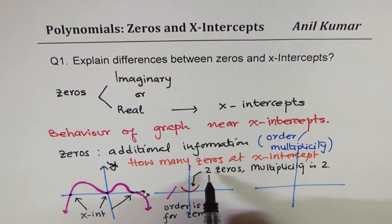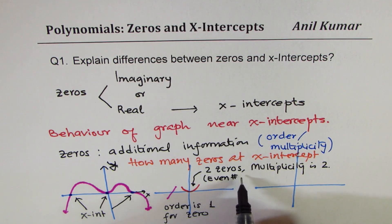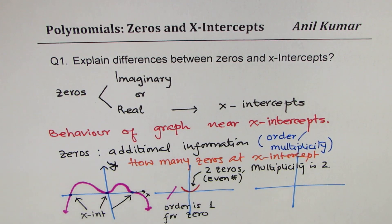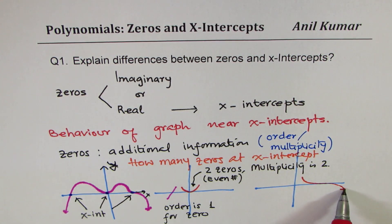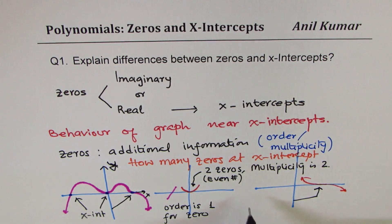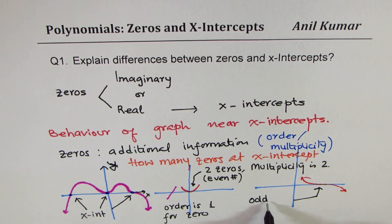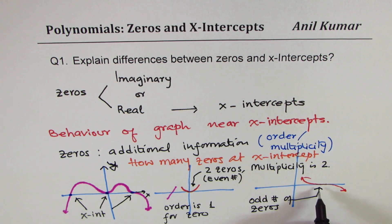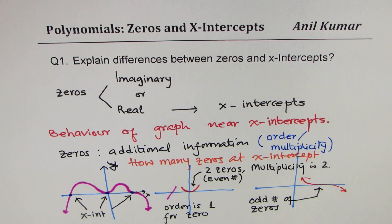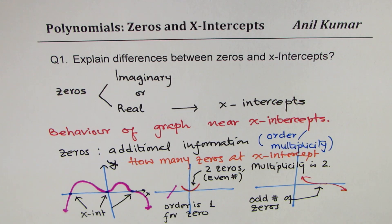If it is x to the power of four there will be four zeros, and in general an even number of zeros. If you have an odd number of zeros — multiplicity could be three, five, seven, nine — the graph goes through like a flattened S-shape. Higher the number of zeros, flatter it should be when you sketch a graph. I hope you get the concept.